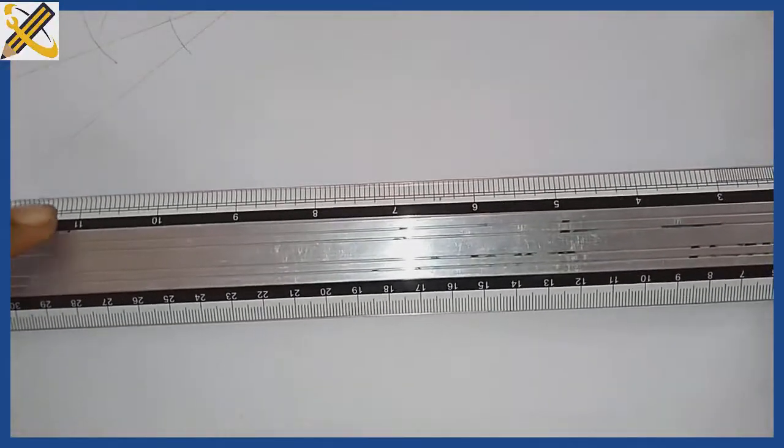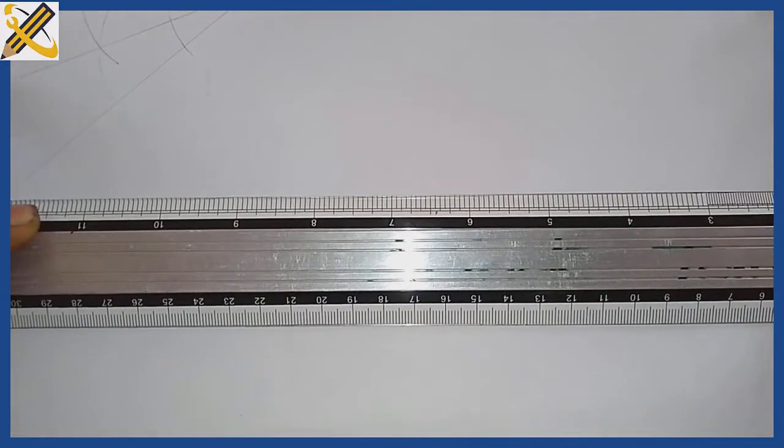We will be looking into how to construct a 60 degree angle. To construct a 60 degree angle, draw a horizontal line.